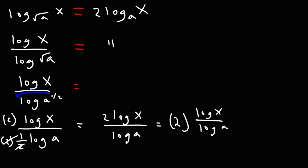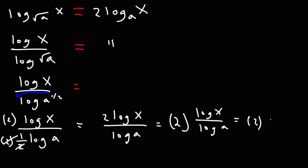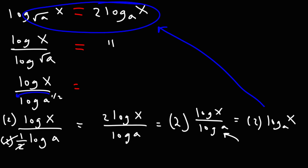Now I'm going to use the change of base formula to go back from a division of two logs into a single log. The one on top goes in the argument position, and the bottom becomes the base. So this gives us 2 times log base a of x, which is equivalent to the expression on the right side. That's how we can prove that this particular logarithmic equation is indeed true.